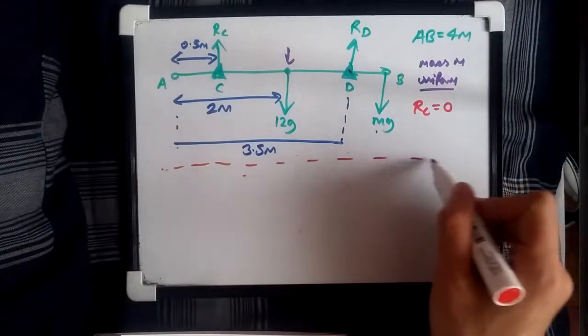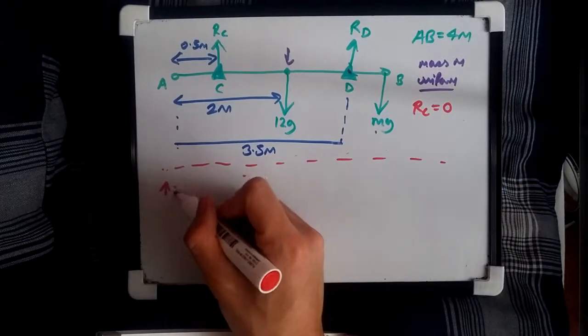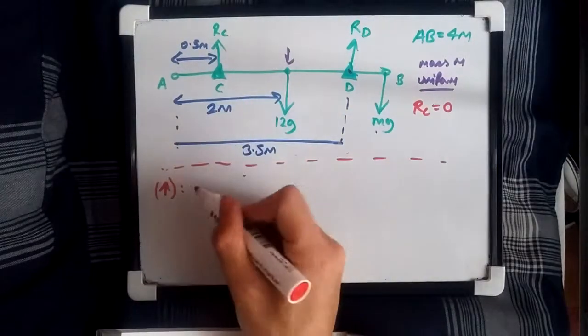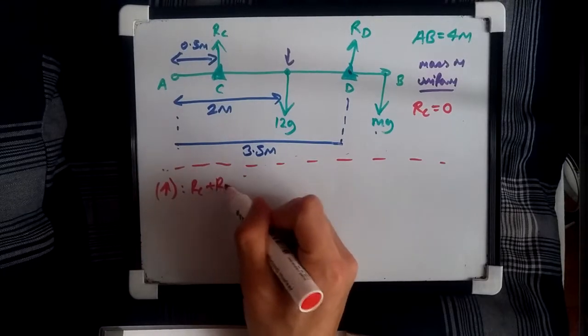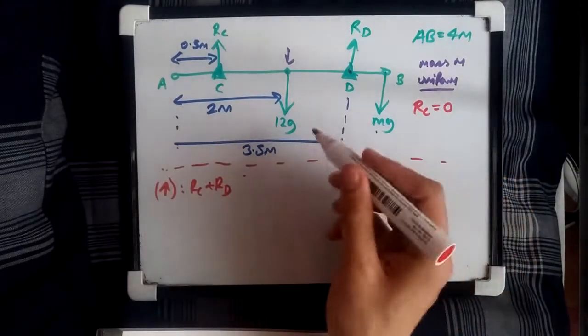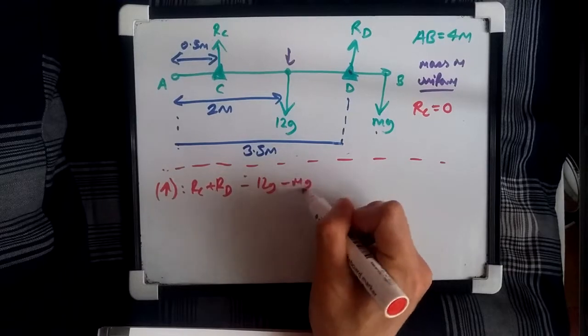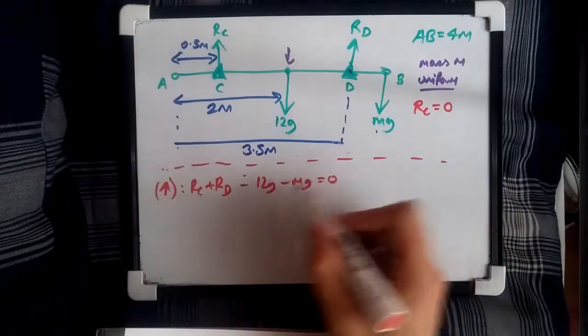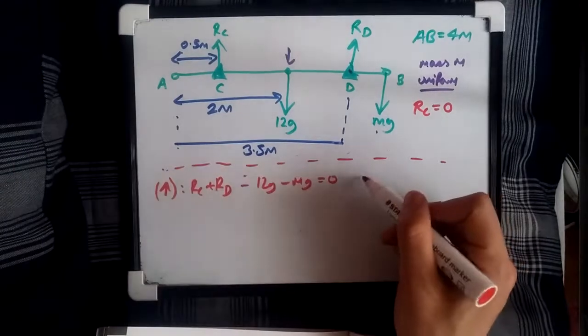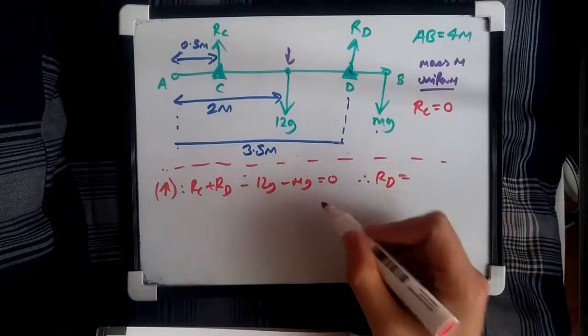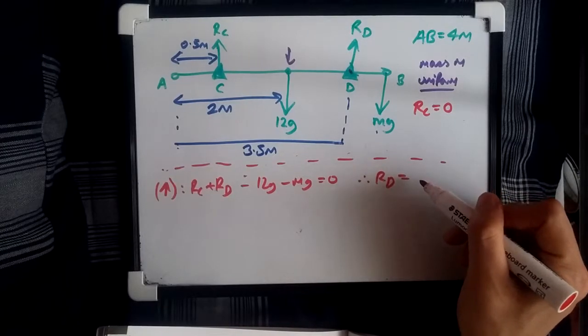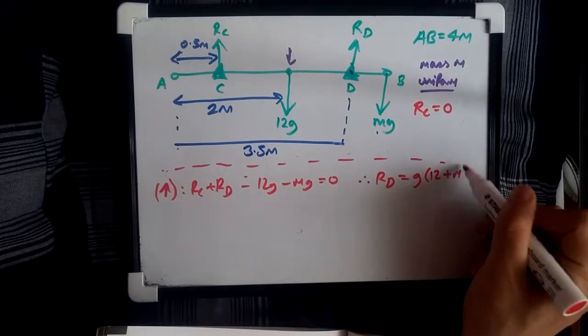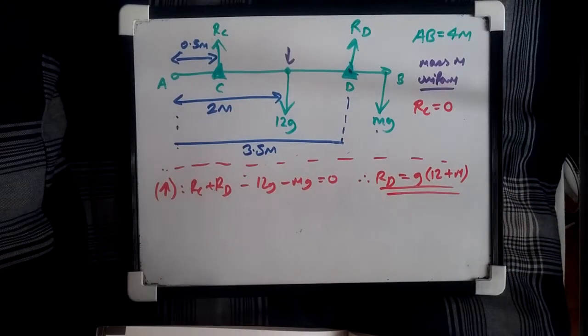So, resolving upwards, what do we get? Well, looking at all the forces, we've got RC plus RD, and looking downwards, we've got minus 12G minus MG equals zero. Knowing that RC is zero, and plusing these two across, we should have RD equals 12G plus MG, or factorizing G out, we have G times 12 plus M. And that's it. So, this is the RD resolved, easy.